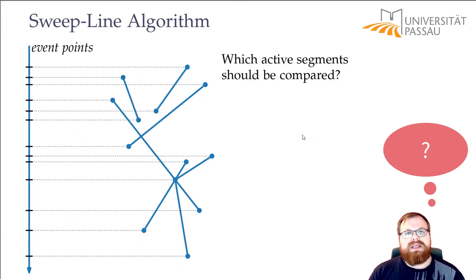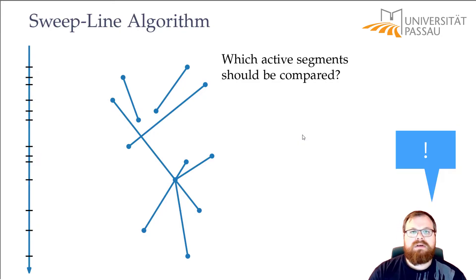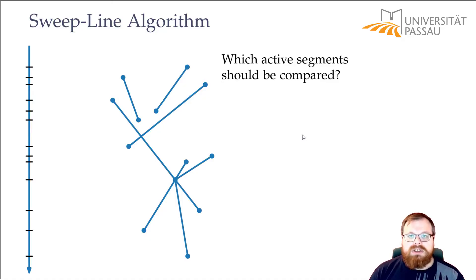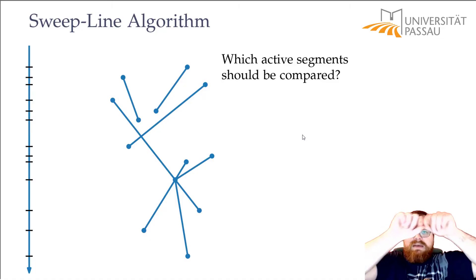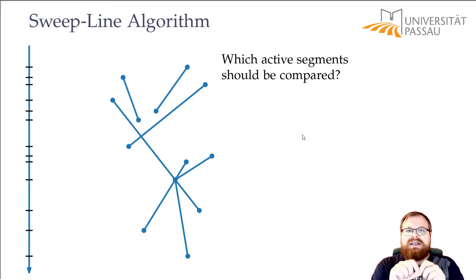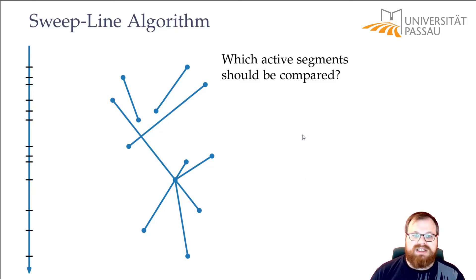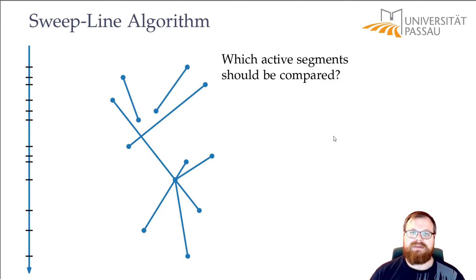What are the active segments that we have to compare? We only want to compare segments that are currently intersected by the sweep line. But it could be that all segments start and end at the same y-coordinate, meaning all segments will always be active at the same time on our sweep line — so it doesn't help us. But maybe we don't have to look at all of them.